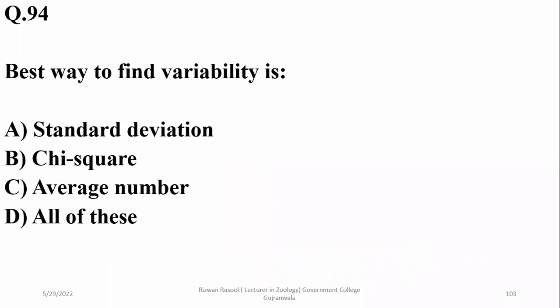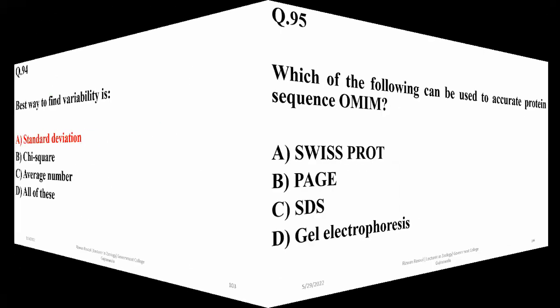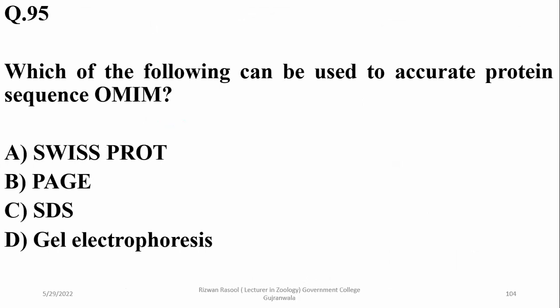Question 94: The best way to find variability statistically is the use of standard deviation. Right option is alpha. Question 95: Which of the following can be used to find accurate protein sequences? The commonly used software is the BLAST technique. Right option is alpha.